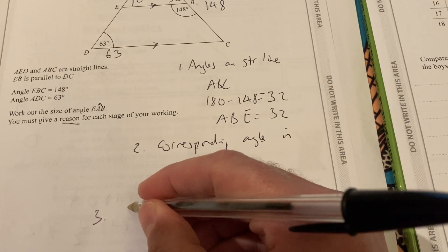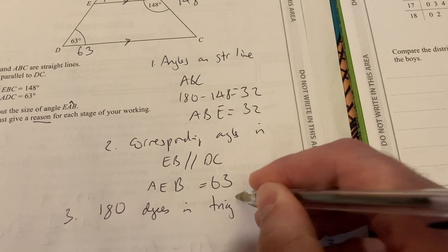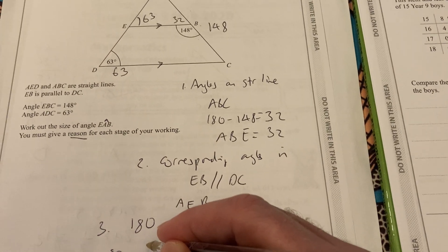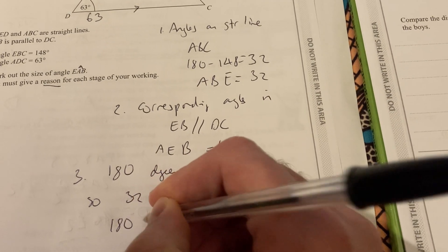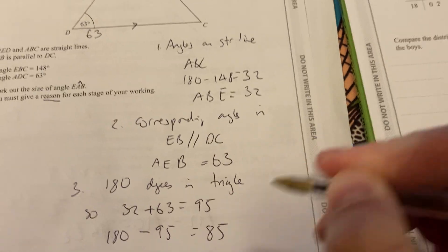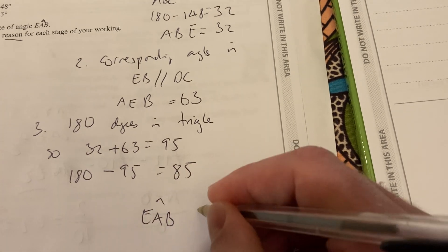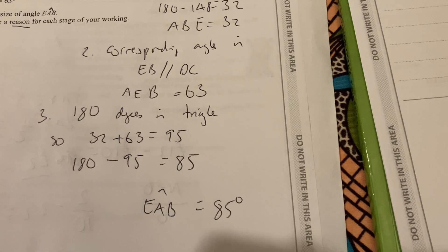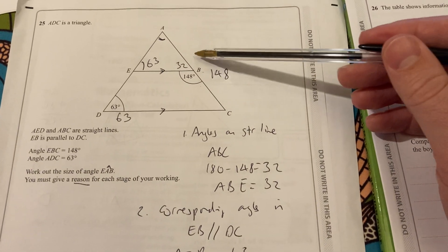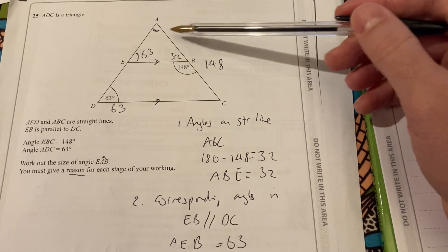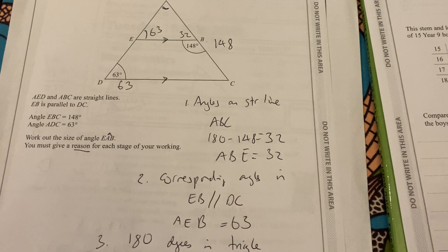Because corresponding angles are equal. So that is also 63. Maybe you could have written that a little bit better. But that gives you the idea of what you'd need to say. You'd have to use angles on a straight line for that point. And parallel lines there. Now we're into this triangle, AEB. So the third point is 180 degrees in a triangle. So I could add 32 plus 63 to be 95. And do 180 minus 95 to give me 85. Leaving EAB, which is what we've been asked for.